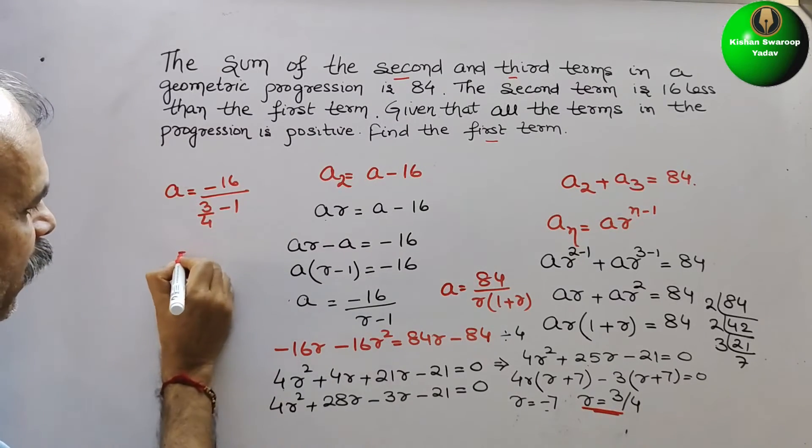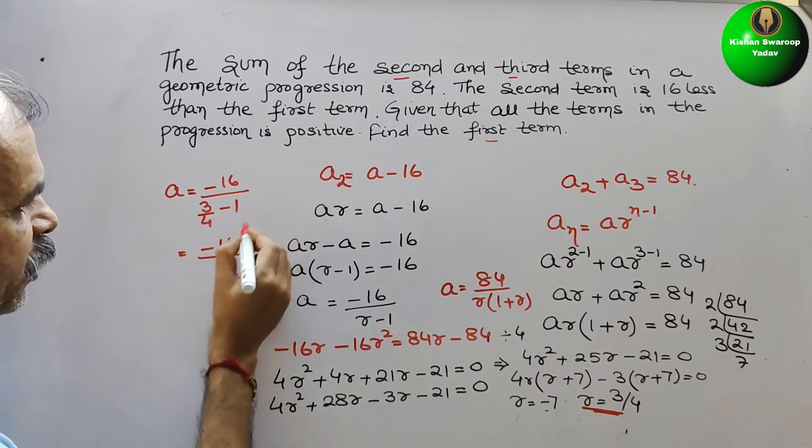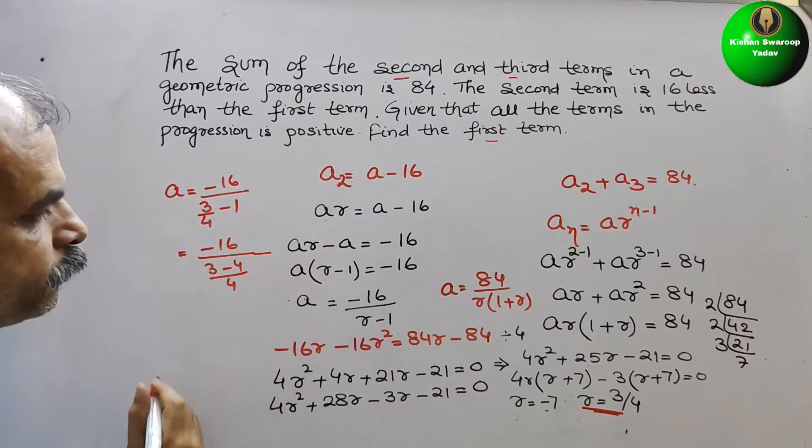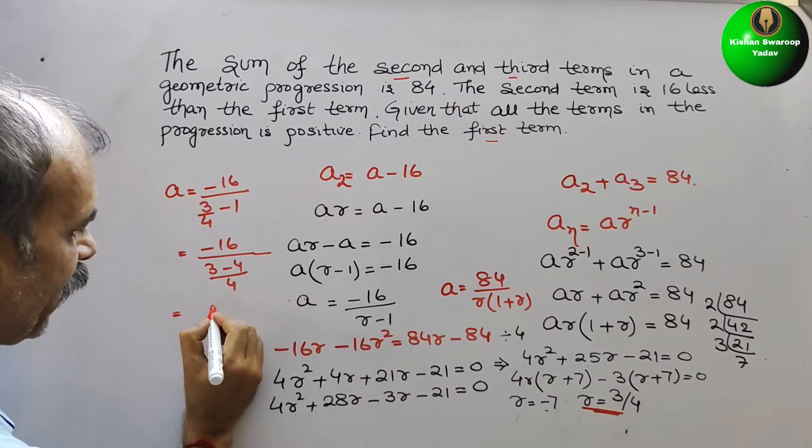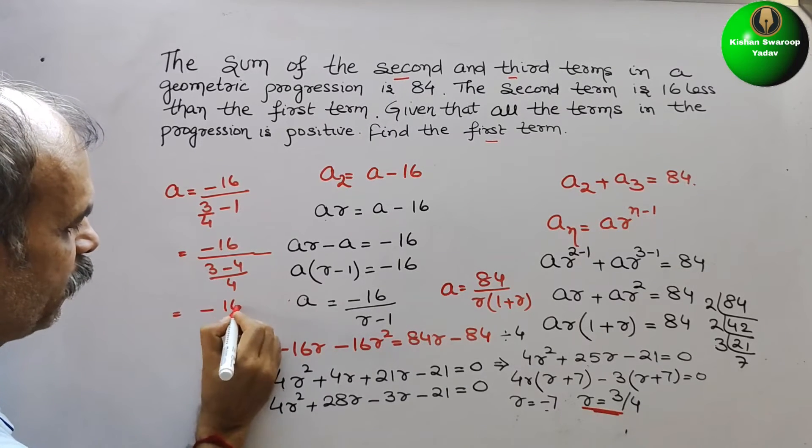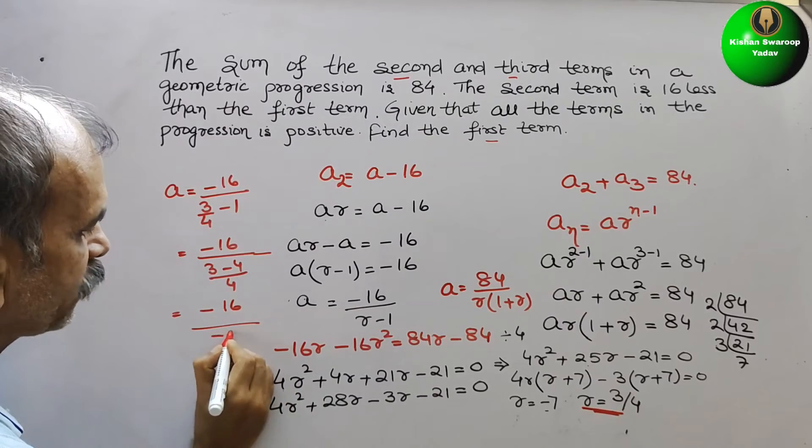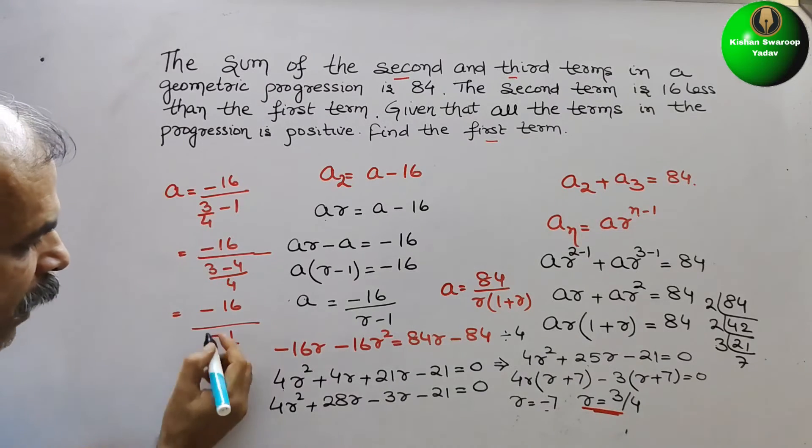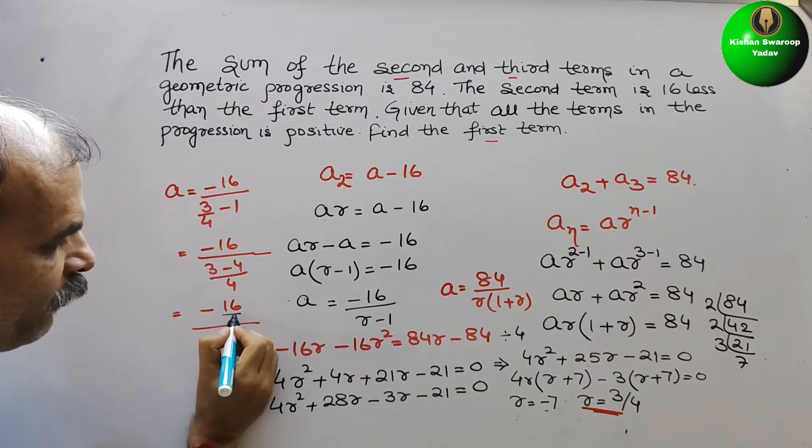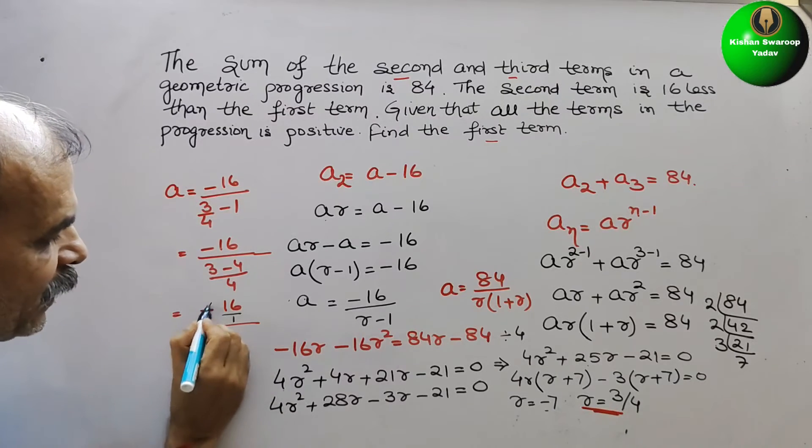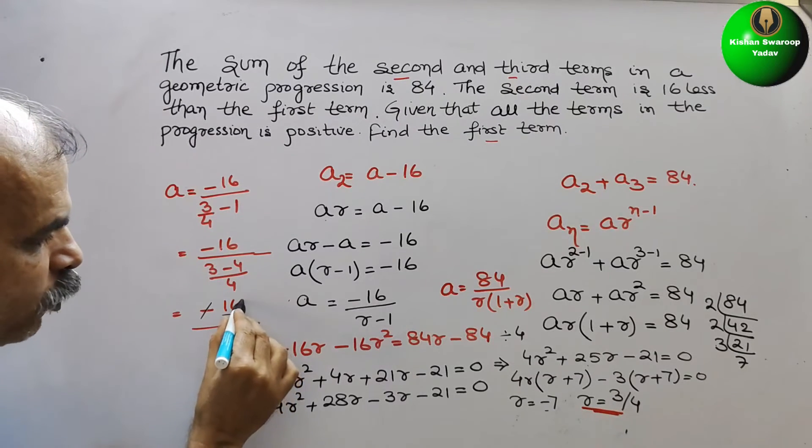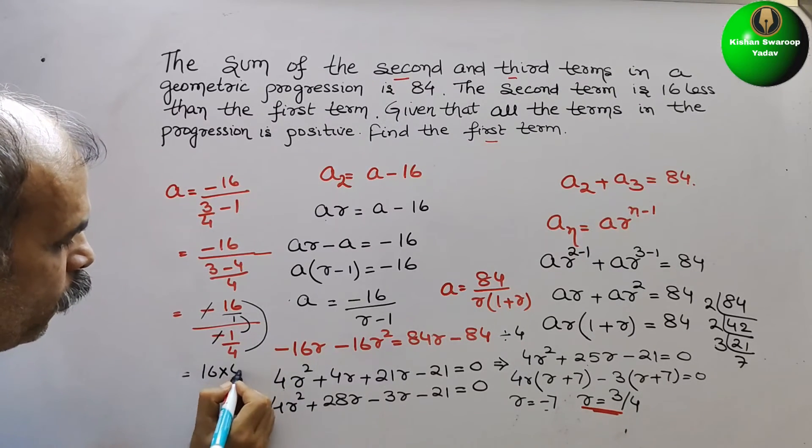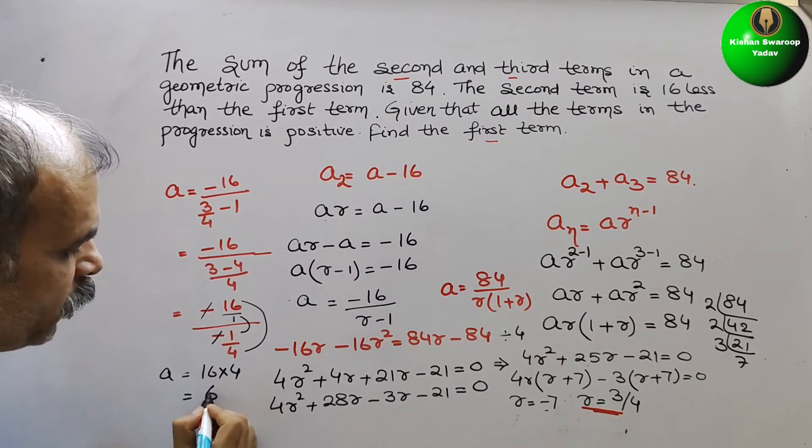So therefore, we will get minus 16 by minus 1 by 4. So now, minus 16 we used to write minus 16 by 1. So minus and minus get cancelled. So now outer to outer multiply it, inner to inner. So here, you will get 16 into 4. That is your a, that is equal to 64.